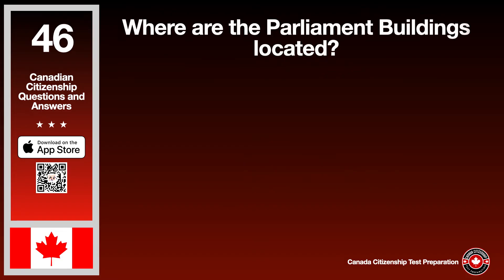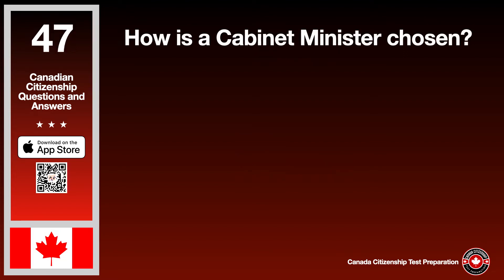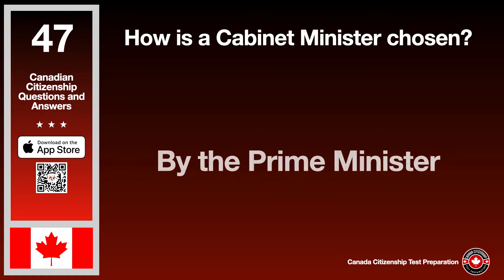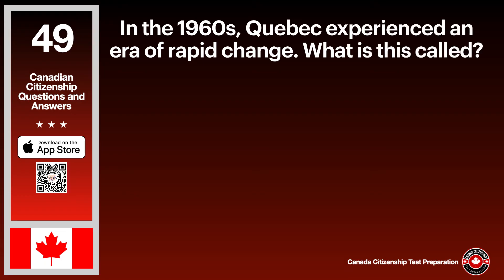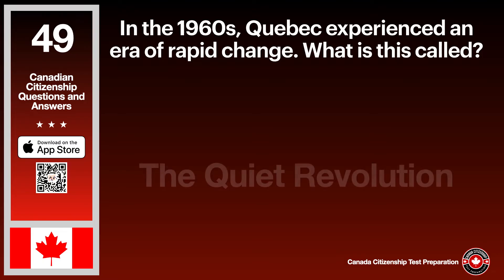Where are the parliament buildings located? The answer is Ottawa. How is a cabinet minister chosen? The answer is by the prime minister. What is the capital city of Ontario? The answer is Toronto. In the 1960s, Quebec experienced an era of rapid change. What is this called? The answer is the Quiet Revolution.